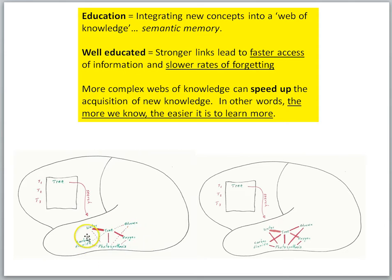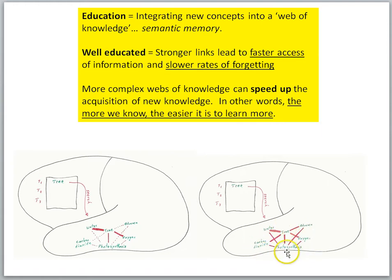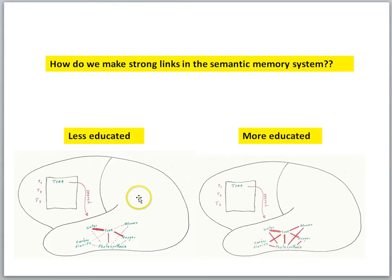Here we compare brains: this person doesn't know much about photosynthesis — it's not strongly integrated with other concepts. This person does have strong links to the relevant concepts, and so this person would be able to tell us about photosynthesis. Education — we want the educational process to lead to this type of semantic memory network where items are strongly stored and linked effectively to other related concepts. The question is, how do you go from the less educated brain to the more educated brain? How do we make those strong links in the semantic memory system?